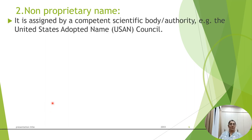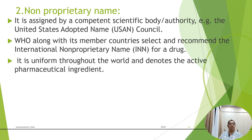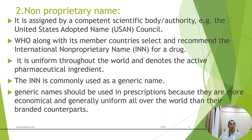The non-proprietary name is assigned by a competent scientific body or authority. The United States Adopted Name (USAN) Council and WHO, along with its member councils, select and recommend the International Non-Proprietary Name (INN) for a drug. It is uniform throughout the world and denotes the active pharmaceutical ingredient. The INN is commonly used as the generic name.